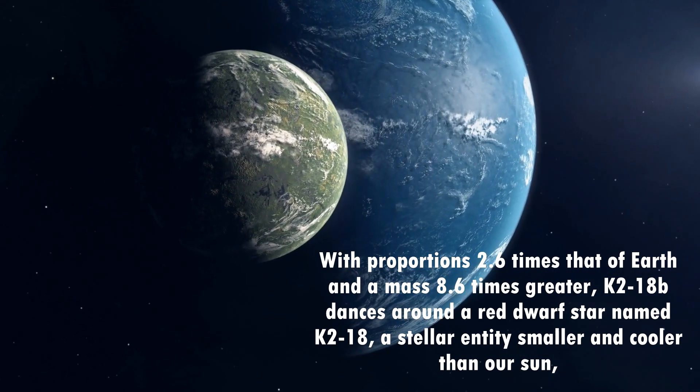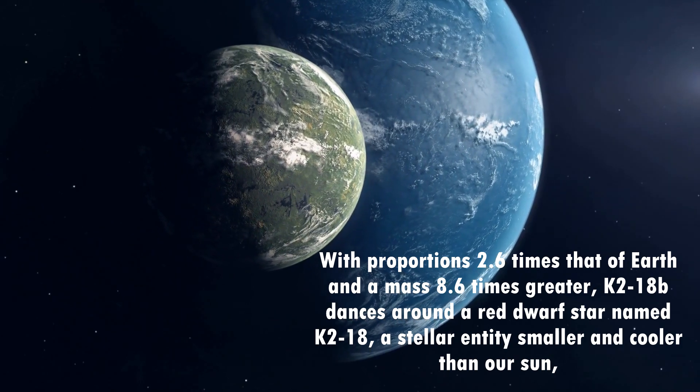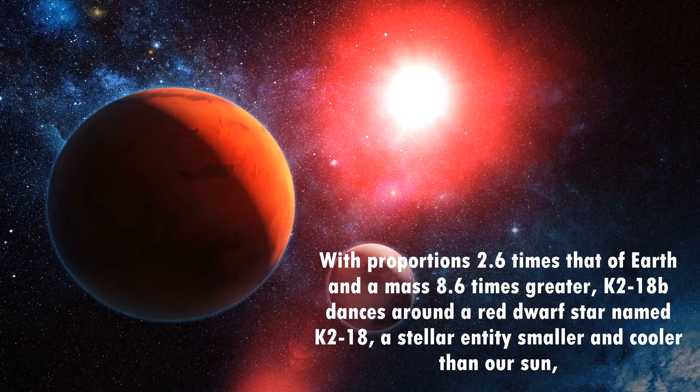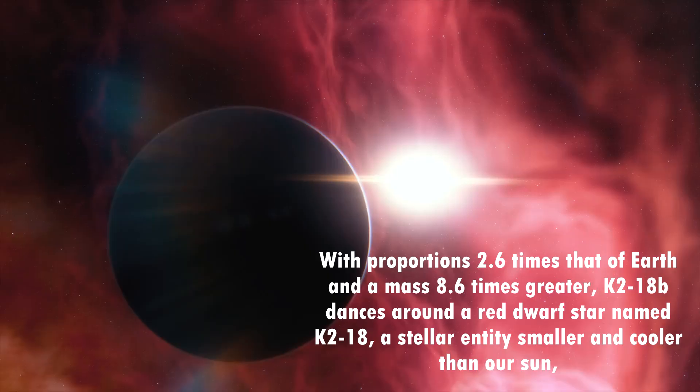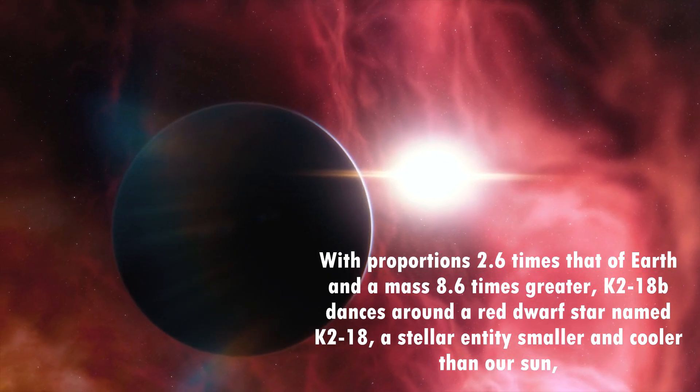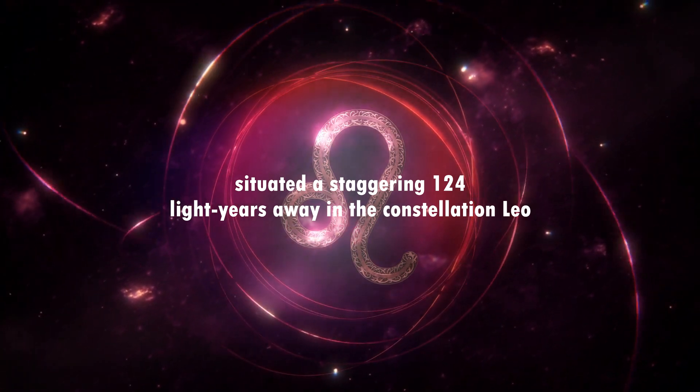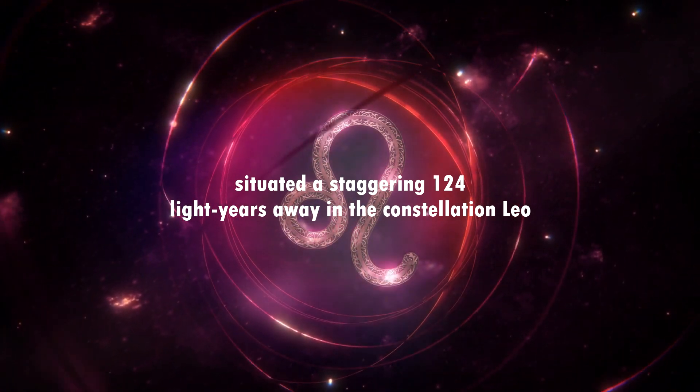With proportions 2.6 times that of Earth and a mass 8.6 times greater, K2-18b dances around a red dwarf star named K2-18, a stellar entity smaller and cooler than our Sun, situated a staggering 124 light-years away in the constellation Leo.